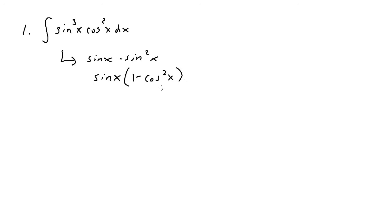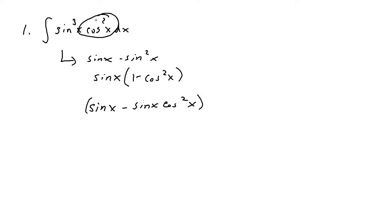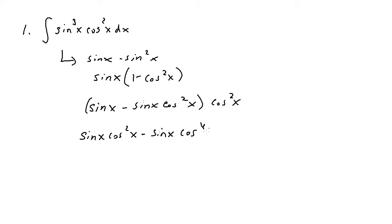Now I can go ahead and distribute over the sine of x. So we get sine of x times 1, which is sine of x, minus sine of x times cosine squared of x. Then I multiply the entire thing by cosine squared, and when I distribute I get sine of x times cosine squared of x minus sine of x times cosine to the fourth x.